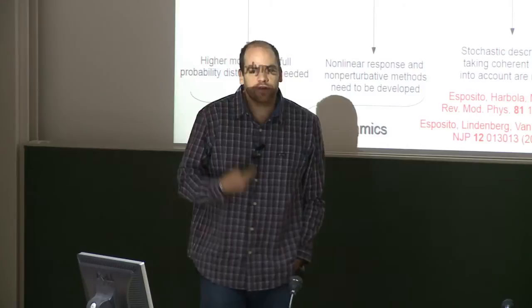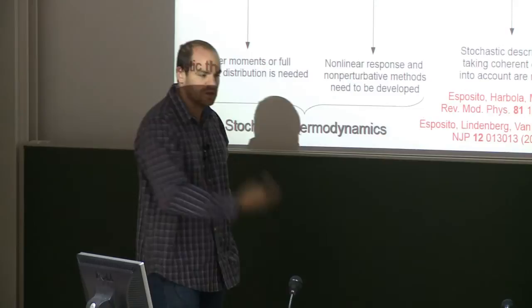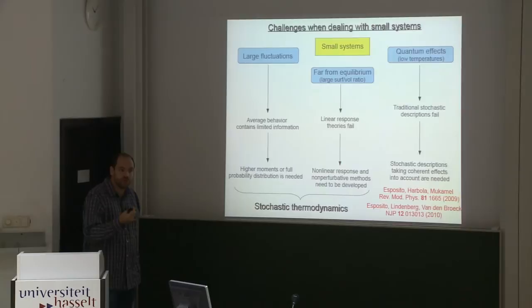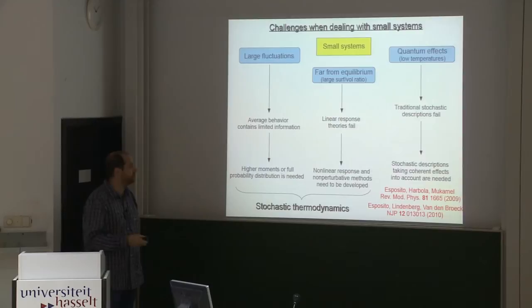A generic introduction of the motivation for these developments in non-equilibrium statistical mechanics is the following. Until the last 10 or 20 years, there have been huge progress in studying small systems. Experimentally, one can really study them in much greater detail than before. What is characteristic of small systems — these are generic characteristics — the first one is that fluctuations are much larger. In large systems, fluctuations are very small compared to the mean behavior. In small systems, fluctuations become very important, so it's important to have a description that can describe these fluctuations.